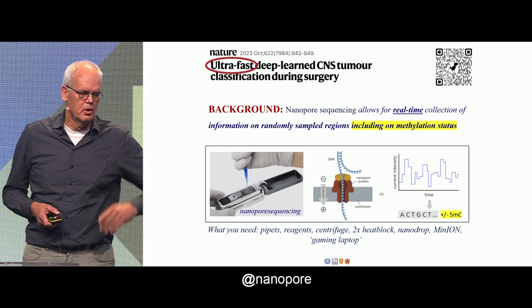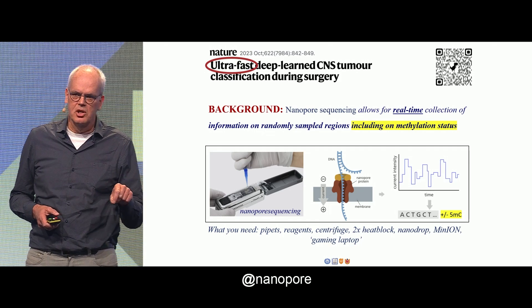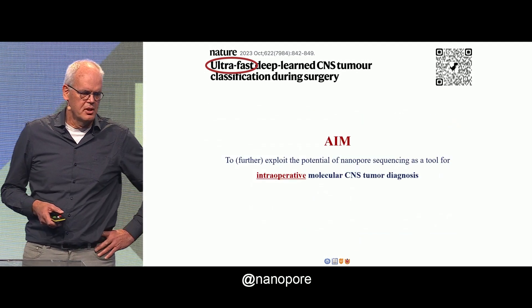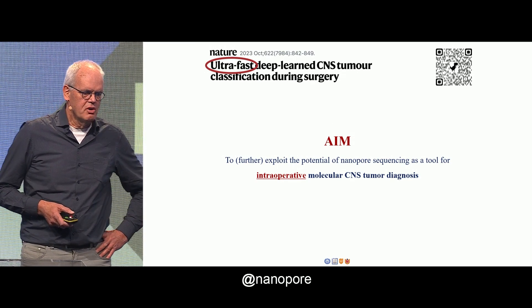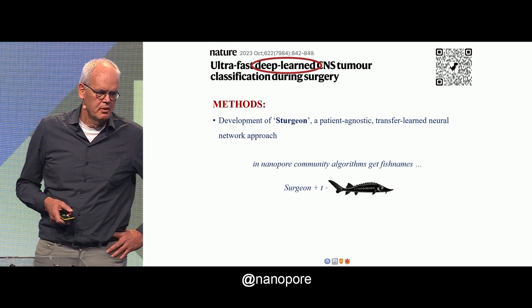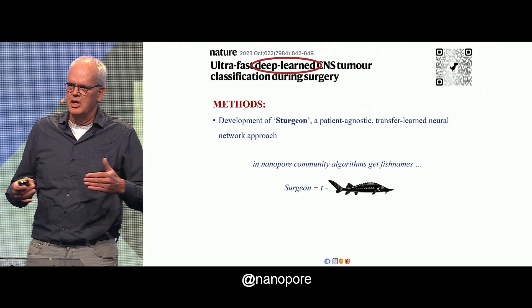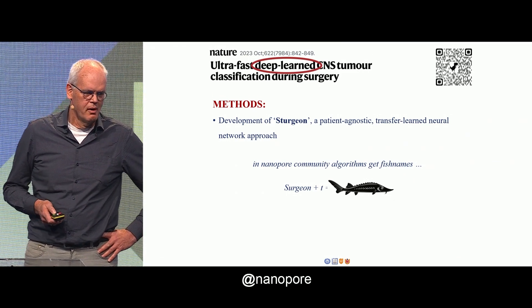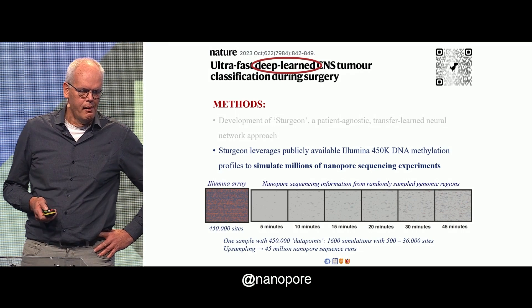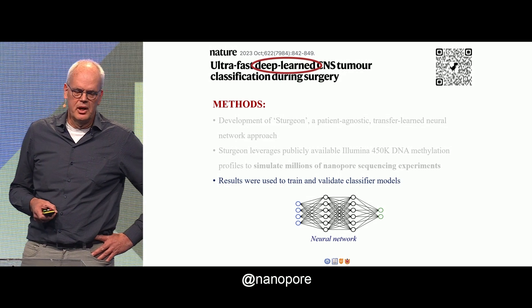Ultra-fast — you know the nanopore method, I assume — and one of the nice things about nanopore sequencing is that it provides real-time information also on the presence or absence of a methyl group on the C nucleotide. The aim of our work, recently published in Nature, was to exploit the potential for intraoperative molecular CNS tumor diagnosis. We developed the Sturgeon method. Sturgeon is kind of a joke because it's a combination of Sturgeon and T, and in the nanopore community fish names are given to particular algorithms. Sturgeon leverages the Illumina 450K information that's publicly available, and results of those experiments were used to train and validate classifier models.